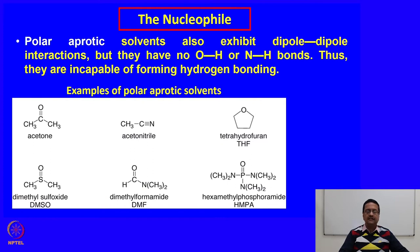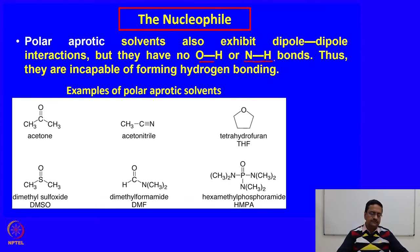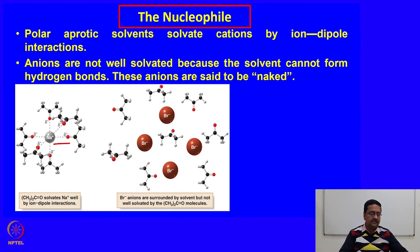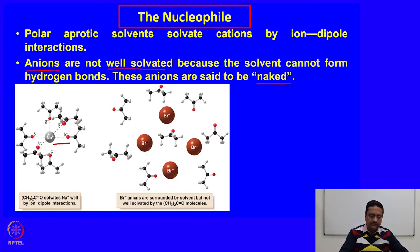Polar aprotic solvents also exhibit dipole-dipole interaction, but they do not have any OH or NH bonds. Thus they are incapable of forming hydrogen bonds. Examples of polar aprotic solvents are acetone, acetonitrile, tetrahydrofuran, dimethyl sulfoxide (DMSO), DMF, and HMPA. Polar aprotic solvents solvate cations by ion-dipole interaction, as shown in the case of acetone, but anions are not well solvated because the solvent cannot form hydrogen bonds. So these anions are said to be naked.